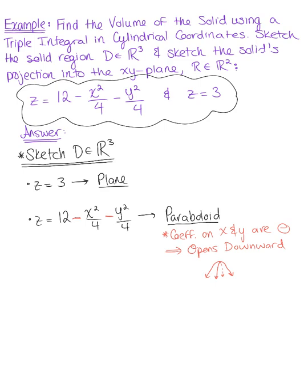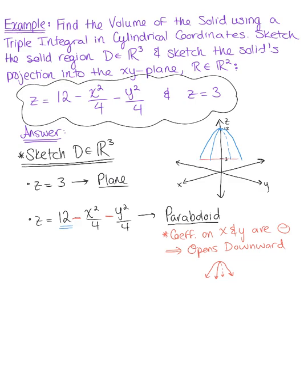Let's go ahead and sketch this graph. Here's our z-axis, here's x, and y. I'm going to mark 12 and 3 on the z-axis. We know the paraboloid is opening downward and shifted up 12 units, so it looks like this. Here is our paraboloid region.